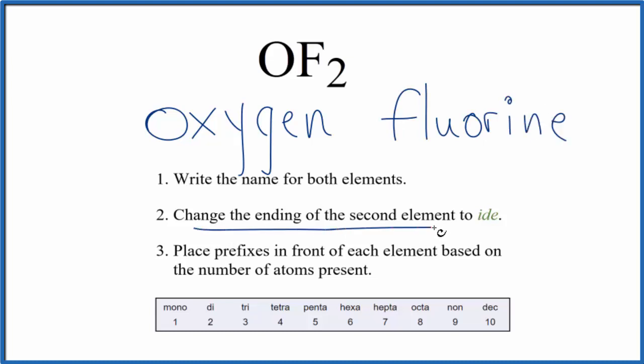Next, we change the ending on the second element to ide. So we cross out the I-N-E, I-D-E. So at this point, we have oxygen fluoride is the name for OF2.